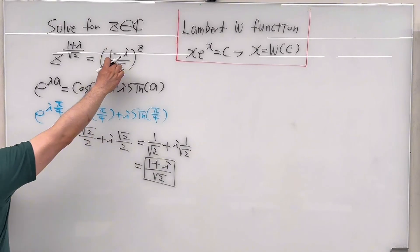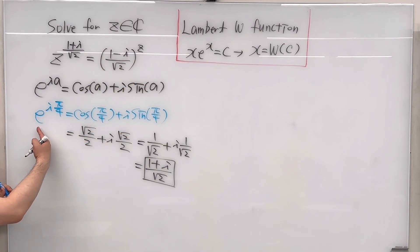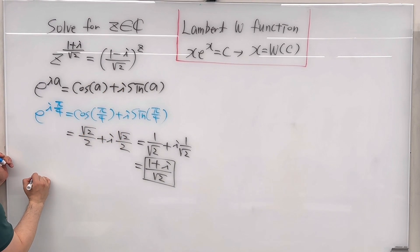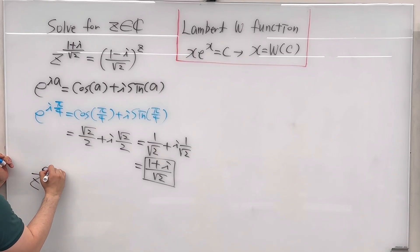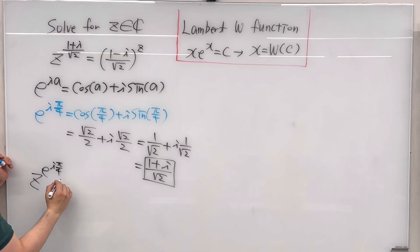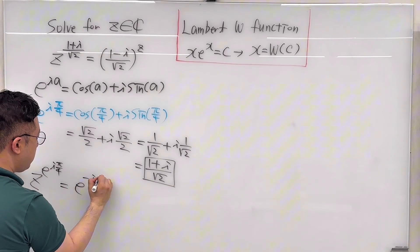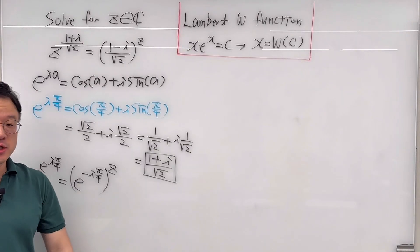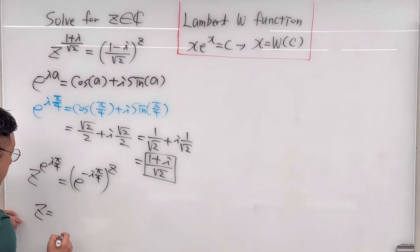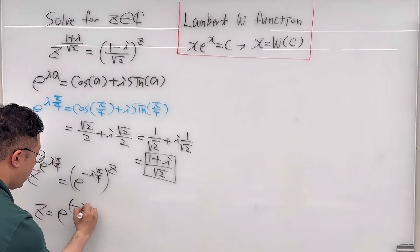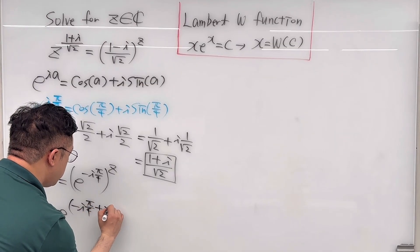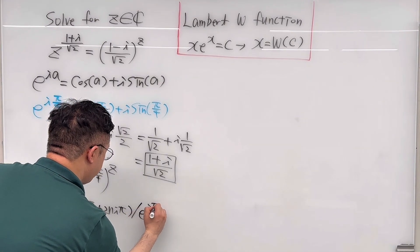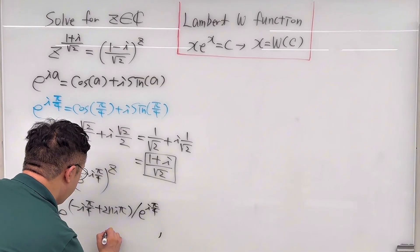Using the same reasoning, (1 minus i) over square root of 2 equals e to the power of negative i·pi/4. So our equation becomes: z to the power of e^(i·pi/4) equals e^(-i·pi/4) to the power of z, where the general expression requires n to be an integer.